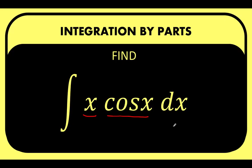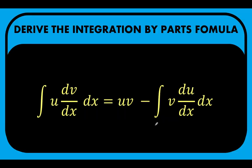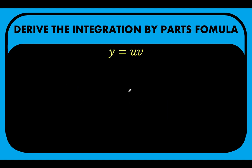Let's start solving this problem. But before we can solve it, we need to first derive the integration by parts formula. To derive the formula, let's begin by letting y equal the product of two functions u of x and v of x, so that y of x equals u(x) times v(x).